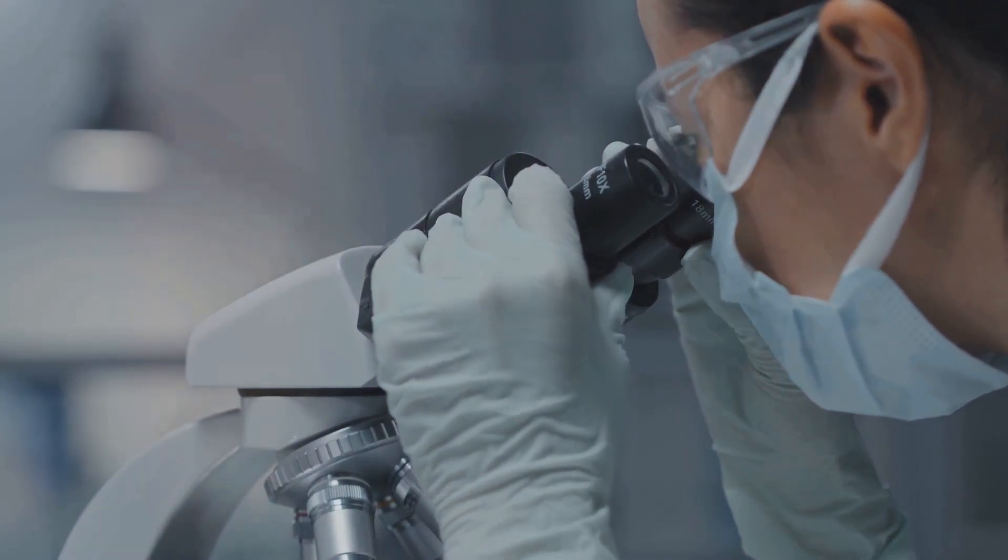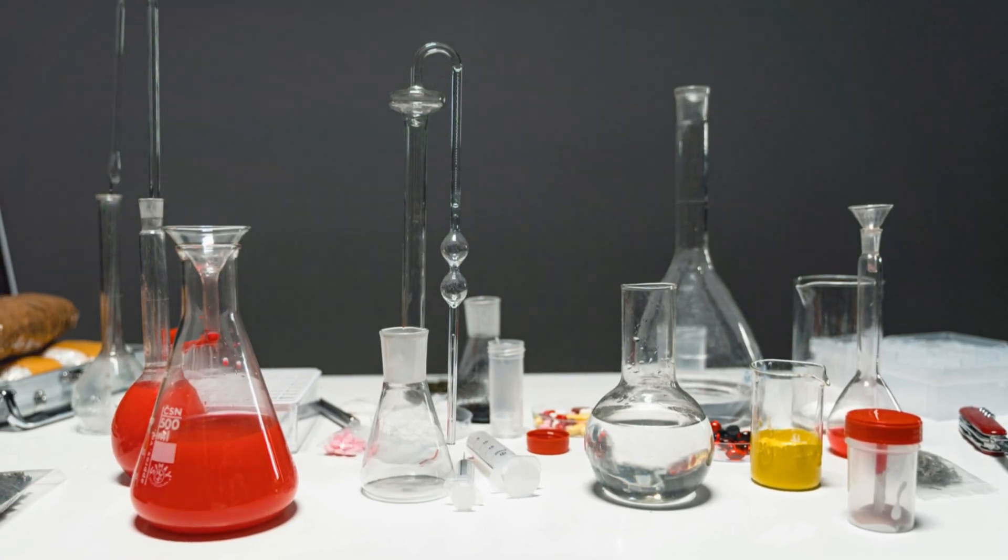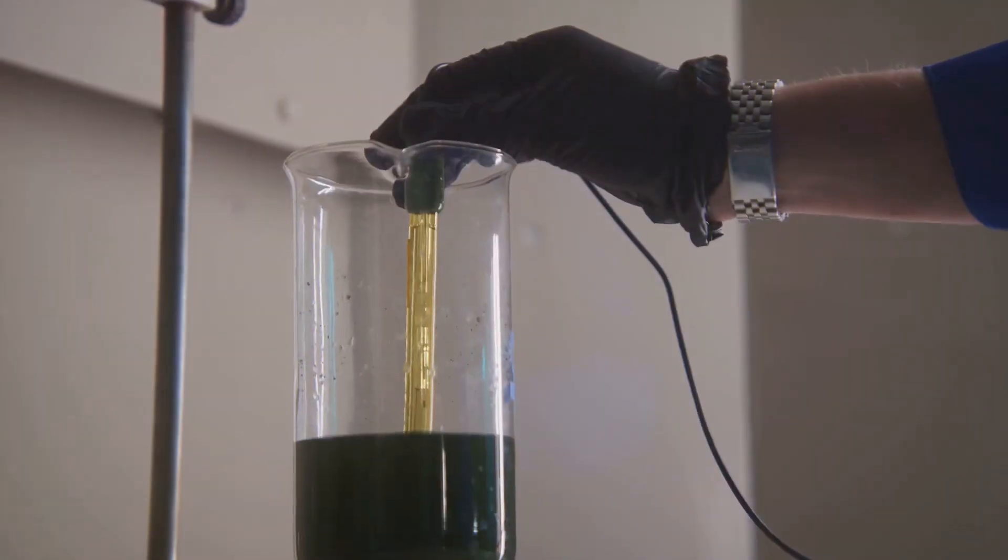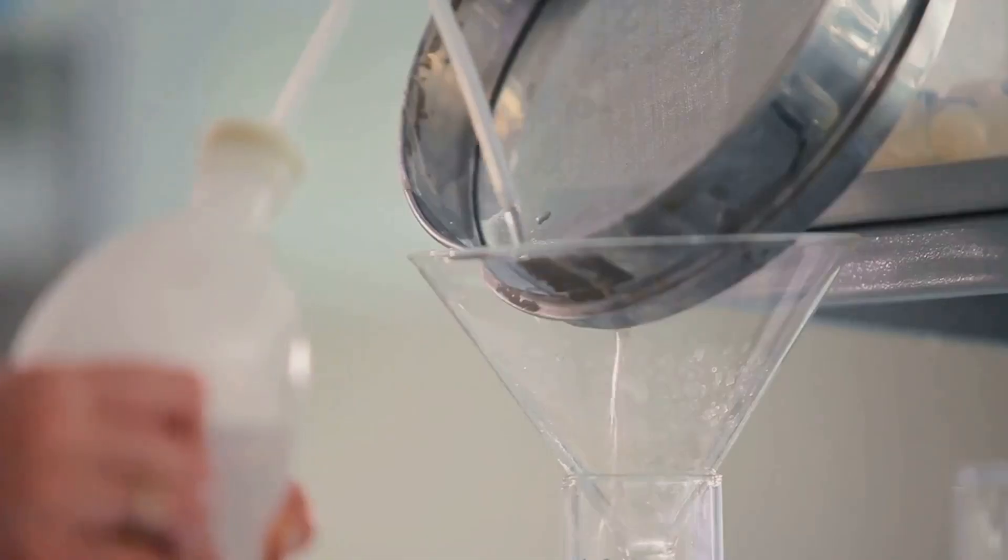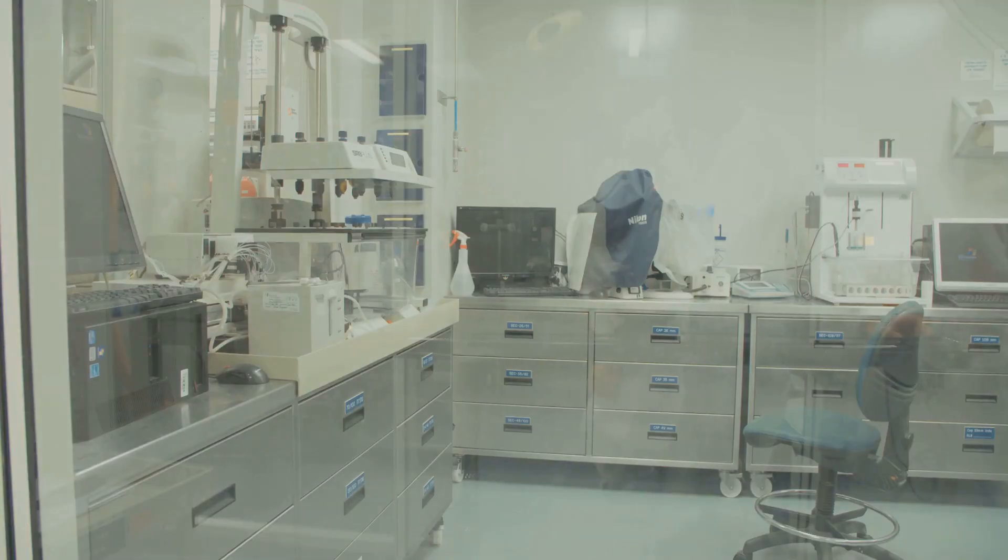Now that we're all decked out in our safety gear, let's gather the tools we'll need to extract that precious gold. Don't worry, it's not as complicated as it sounds. First, we'll need some basic chemistry equipment: glass beakers and flasks to hold our solutions, a glass stirring rod for mixing, and a funnel and filter paper for separating the gold later on.